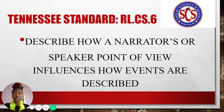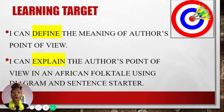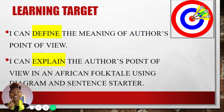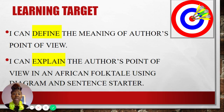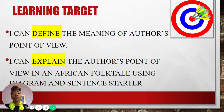The standard we're going to be focusing on today is Tennessee Standard RL.CS 0.6, which says: describe how a narrator or speaker's point of view influences how events are described. Our first learning target is: I can define the meaning of author's point of view. Our second learning target is: I can explain the author's point of view in an African folktale using a diagram and a sentence starter. You'll be using your tools — the diagram and the sentence starter — in your independent activity, which will be further explained in this YouTube lesson.